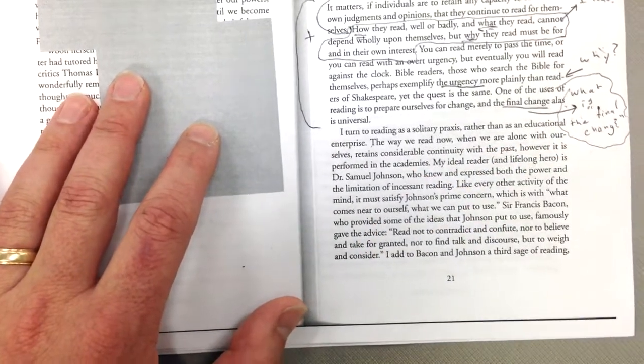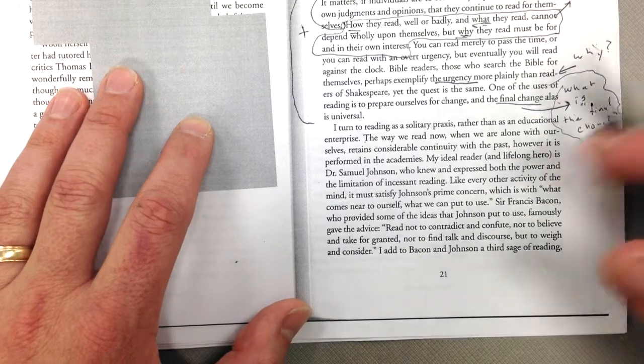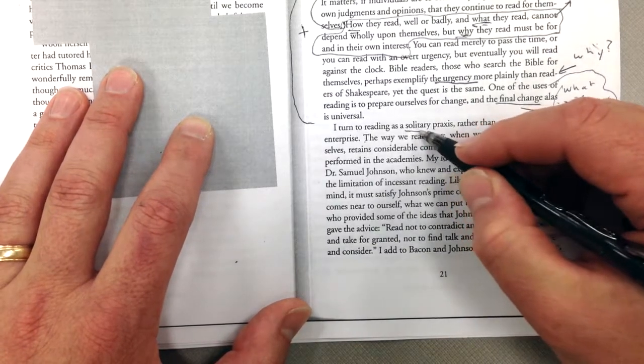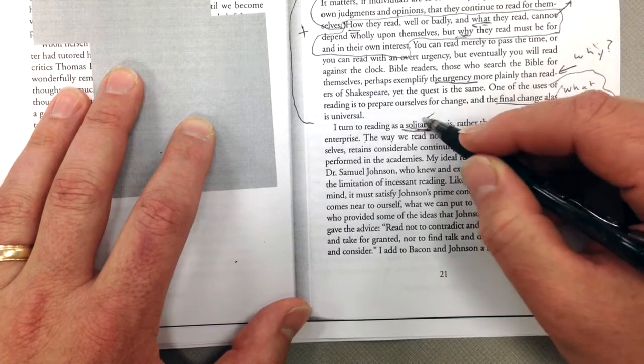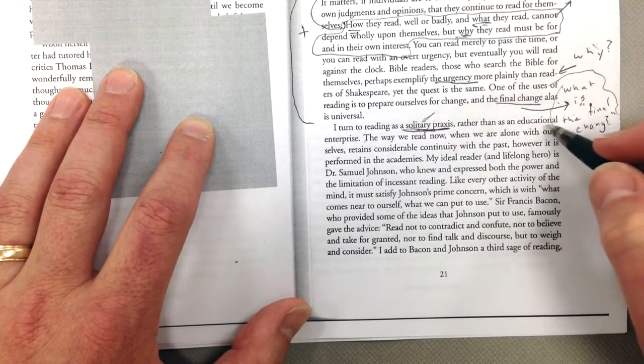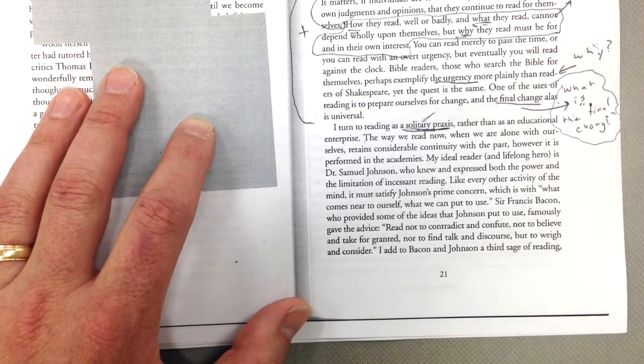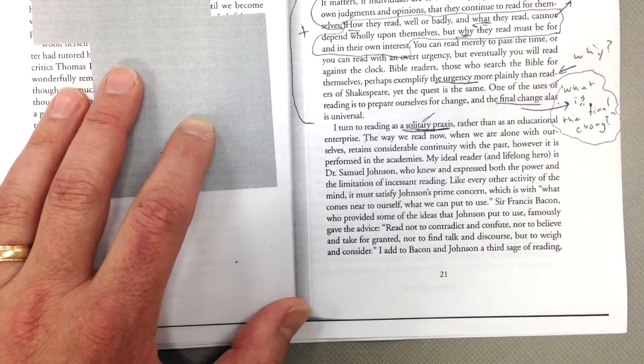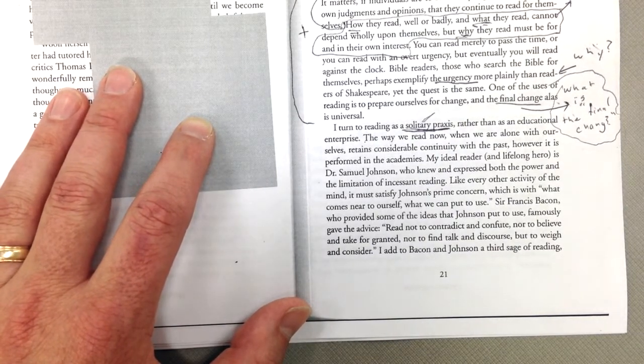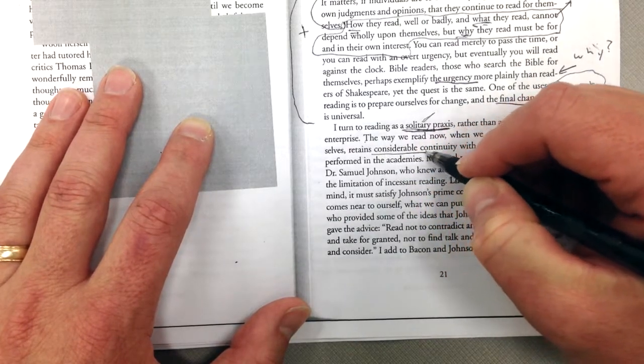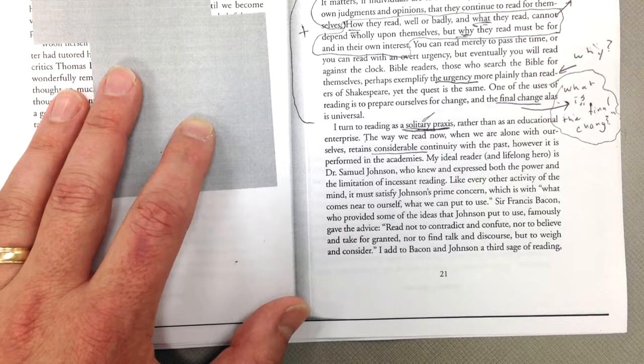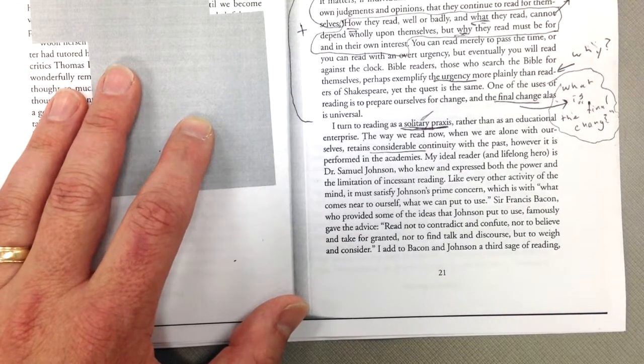I turn to reading as a solitary practice rather than as an educational enterprise. Otherwise, solitary practice means like a single thing. Solitary has to do with one person rather than an educational enterprise. The way we read now when we are alone with ourselves retains considerable continuity with the past. It hasn't changed very much in 600 years. It's just you and the words in front of you and your meaning that you bring to the words.